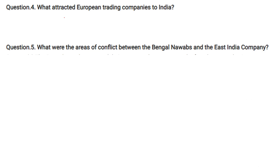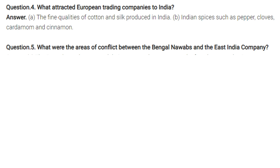What attracted European trading companies to India? India had fine qualities of cotton and silk, and Indian spices like pepper, cloves, cardamom, and cinnamon were very famous.